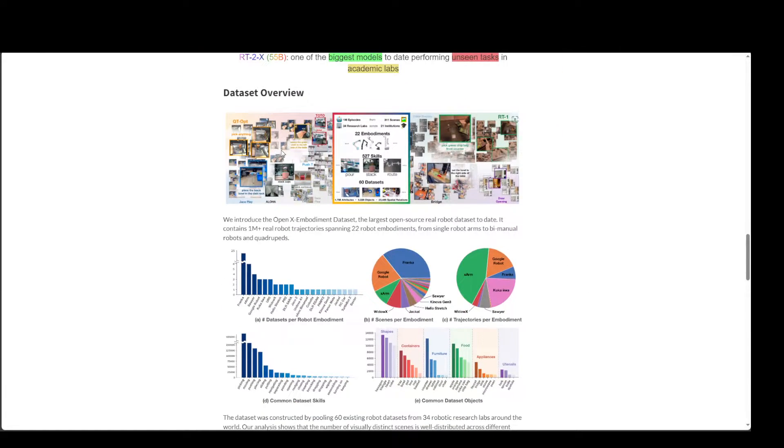And then similarly, this is the dataset which I was referring to, where it has 527 skills here. And also you can see on the very right, they have built on their previous robotics transformer model RT1 and RT2. And it has shown improvements due to the diverse data from the new dataset.